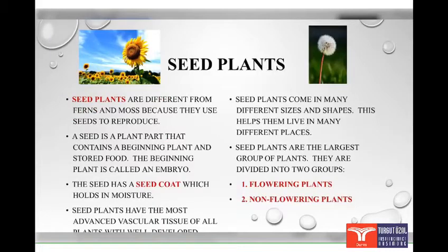Let's learn some characteristics of seed plants. Seed plants are different from ferns and mosses because they use seeds to reproduce. A seed is a plant part that contains a beginning plant and stored food. The beginning plant is called an embryo. The seed has a seed coat which holds in moisture. Seed plants have the most advanced vascular tissue of all plants, with well-developed leaves, stems and roots.